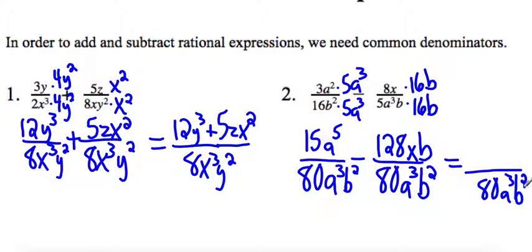And the numerators, these are not like terms, so you're just going to have to write them separate. 15a to the 5th minus 128xb.